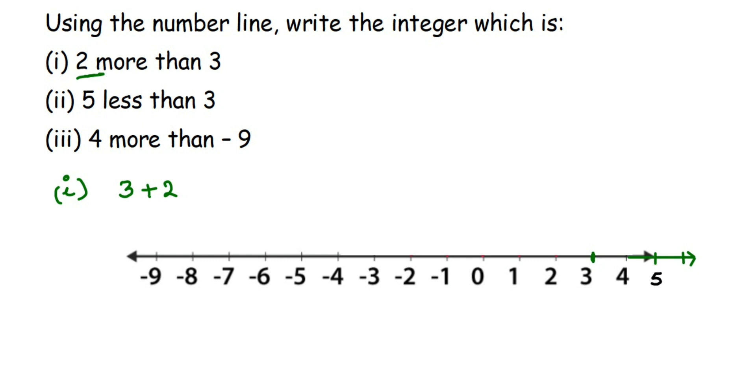You can see that 0 is always neutral. On the right side of 0 we have positive numbers. On the left side of 0 we have negative numbers. When you're adding a number you always move towards the right side. When you're subtracting a number you always move towards the left side.